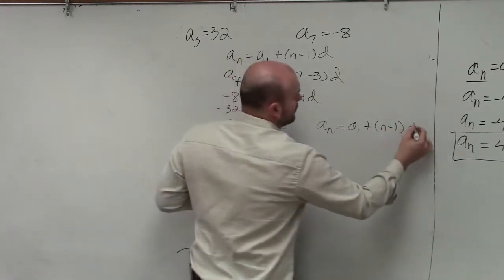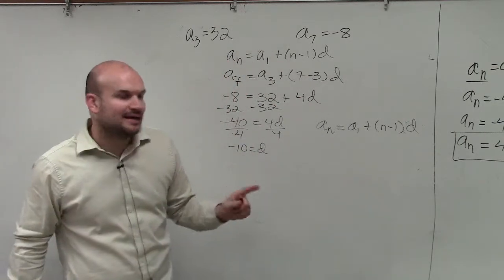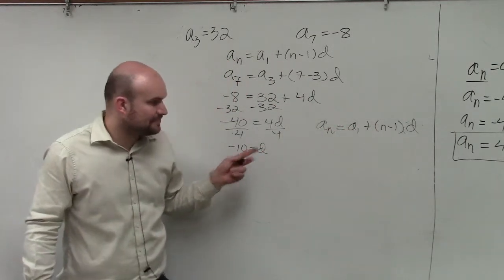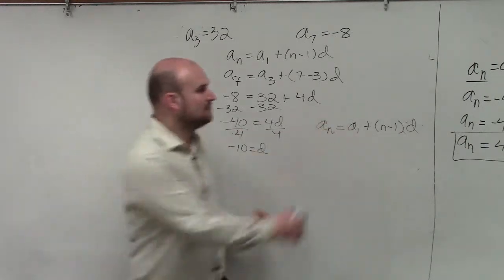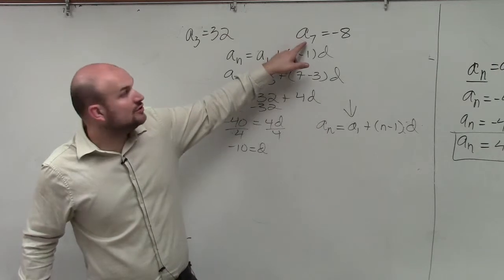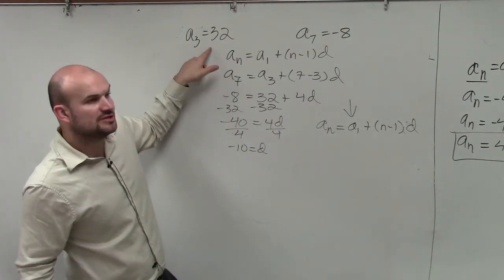And now, when going back and using the explicit formula, we know what the value of d is, which is negative 10. Now, to find a sub 1, we need to pick a value for a sub n. So we could either use a sub 7, which was equal to negative 8, or we could use a sub 3, which equals 32.